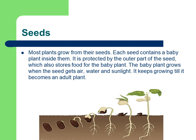What are seeds? Most plants grow from their seeds. Each seed contains a baby plant inside it, protected by the outer part of the seed, which also stores food for the baby plant. The baby plant grows when the seed gets air, water and sunlight, and keeps growing until it becomes an adult plant. In the diagram you can see a seed, then the seed starts budding, small roots are growing, then the stem is growing and it grows into a big plant with stem, leaves and buds, and roots underground.